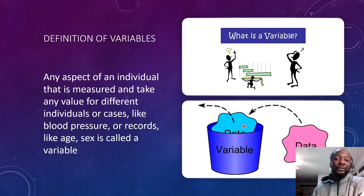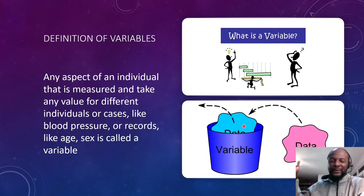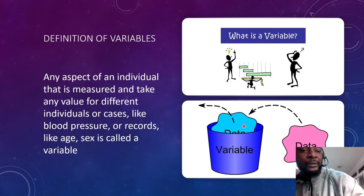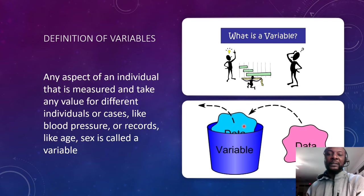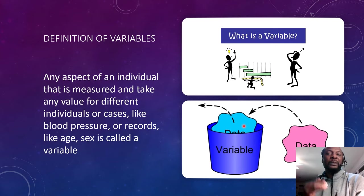This is different from a constant. Something that is a constant does not change — if you remember mathematics, when they say k is constant. Something that is a constant does not actually change, but something that is a variable must vary, and that's why it's called a variable.